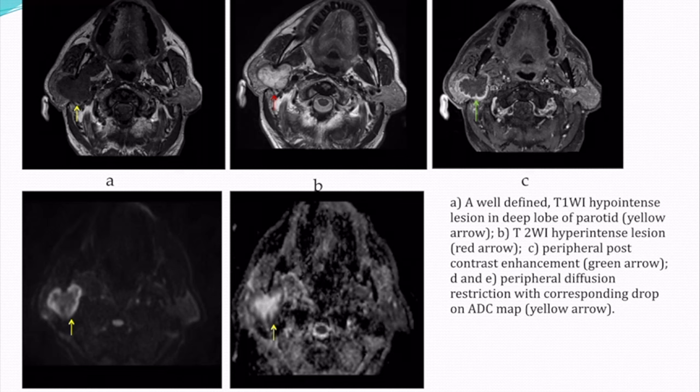A well-defined T1 hypo-intense lesion in the deep lobe of the parotid gland showed T2 hyperintensity with peripheral post-contrast enhancement, central areas of necrosis, and peripheral areas of diffusion restriction. The diagnosis given was carcinoma ex-pleomorphic adenoma, which was confirmed on pathology.